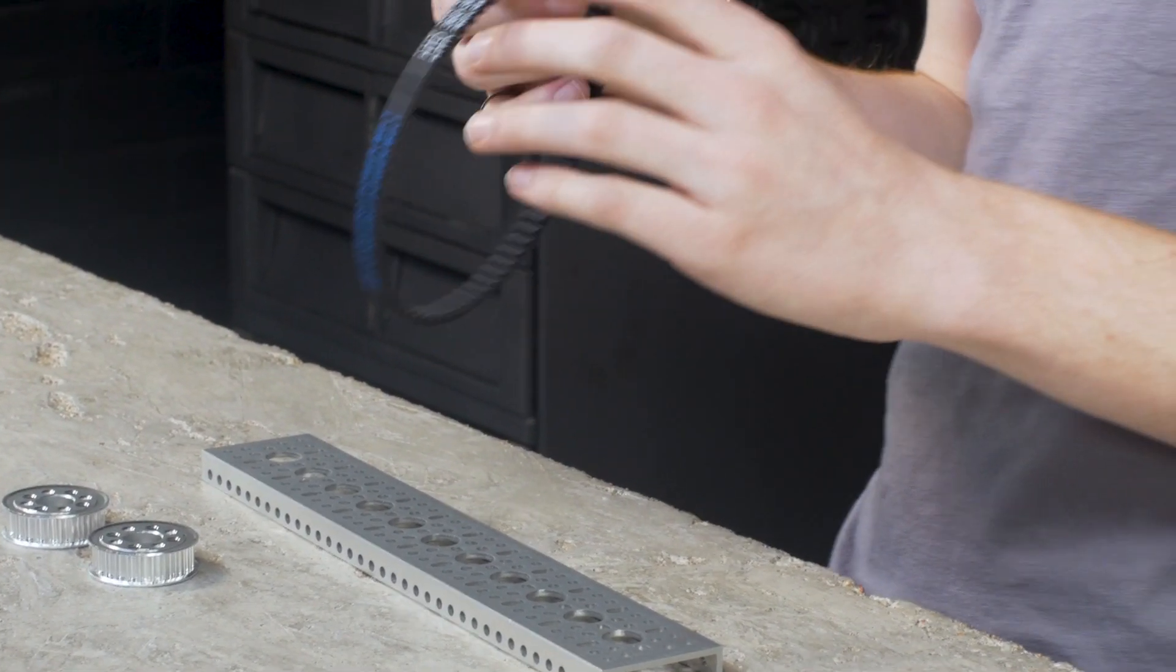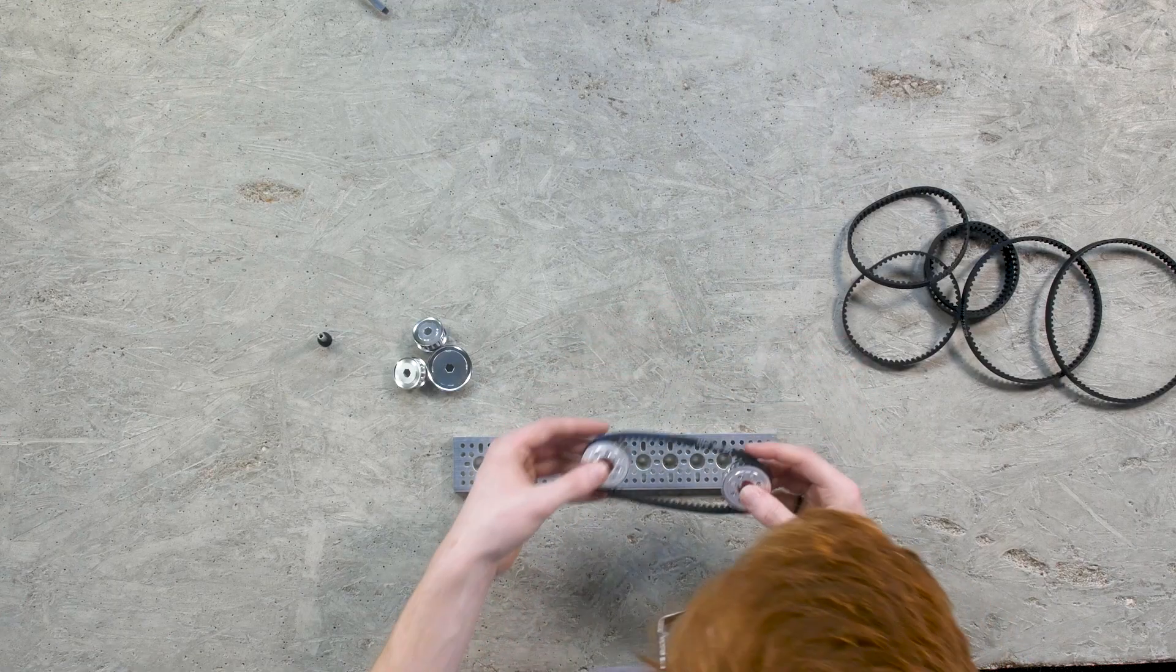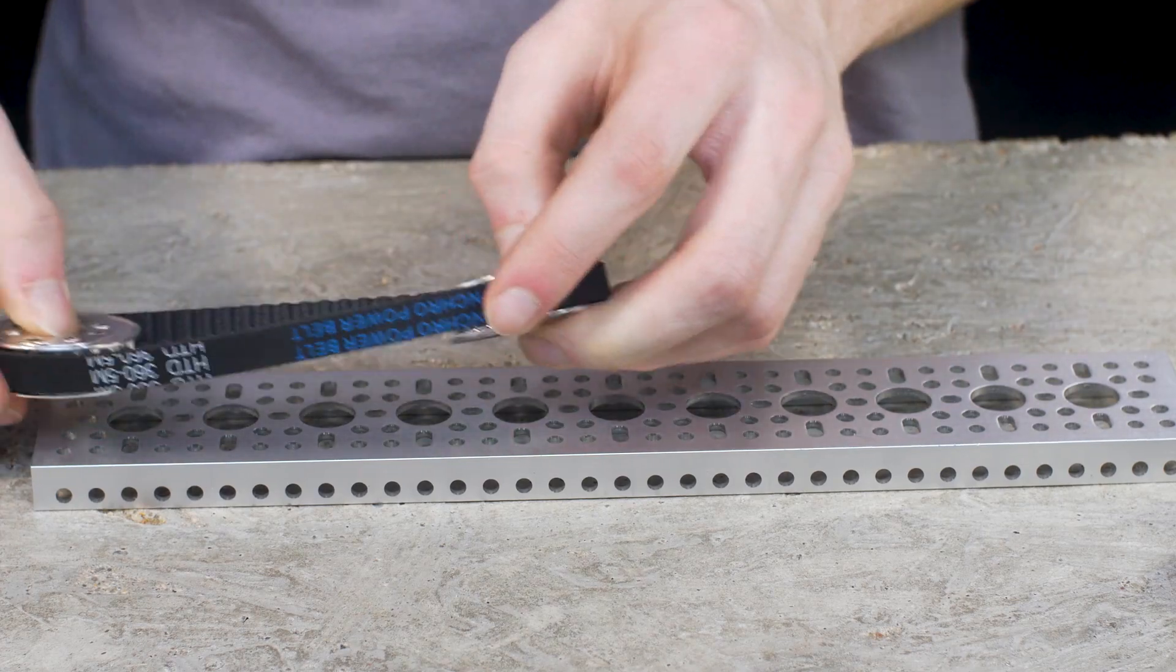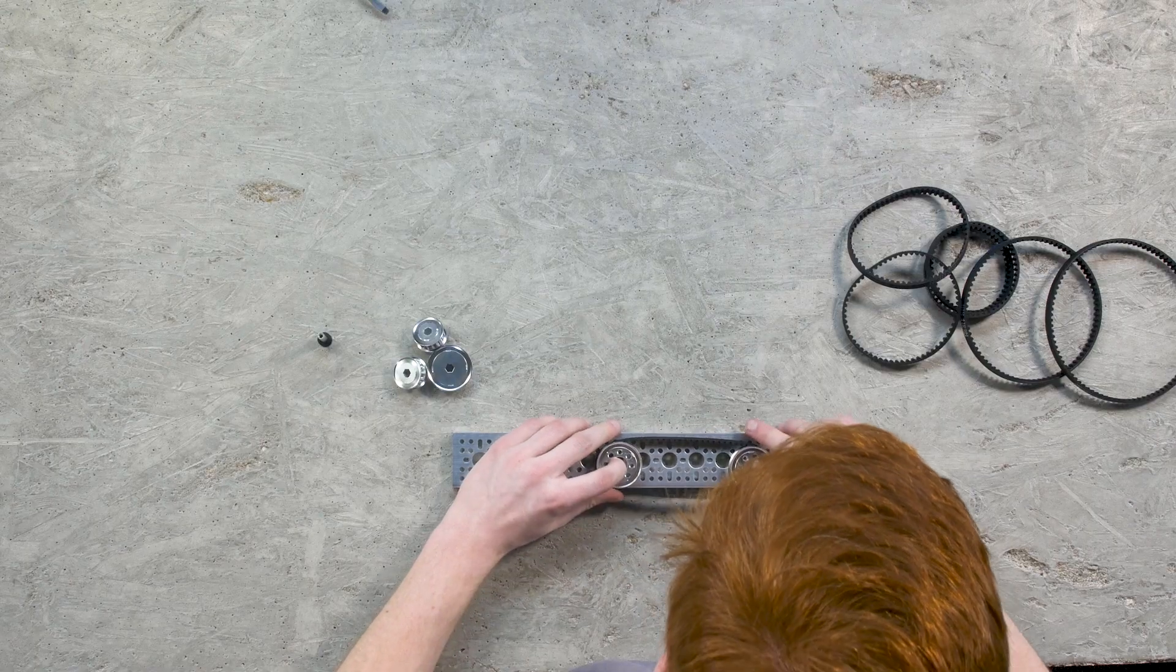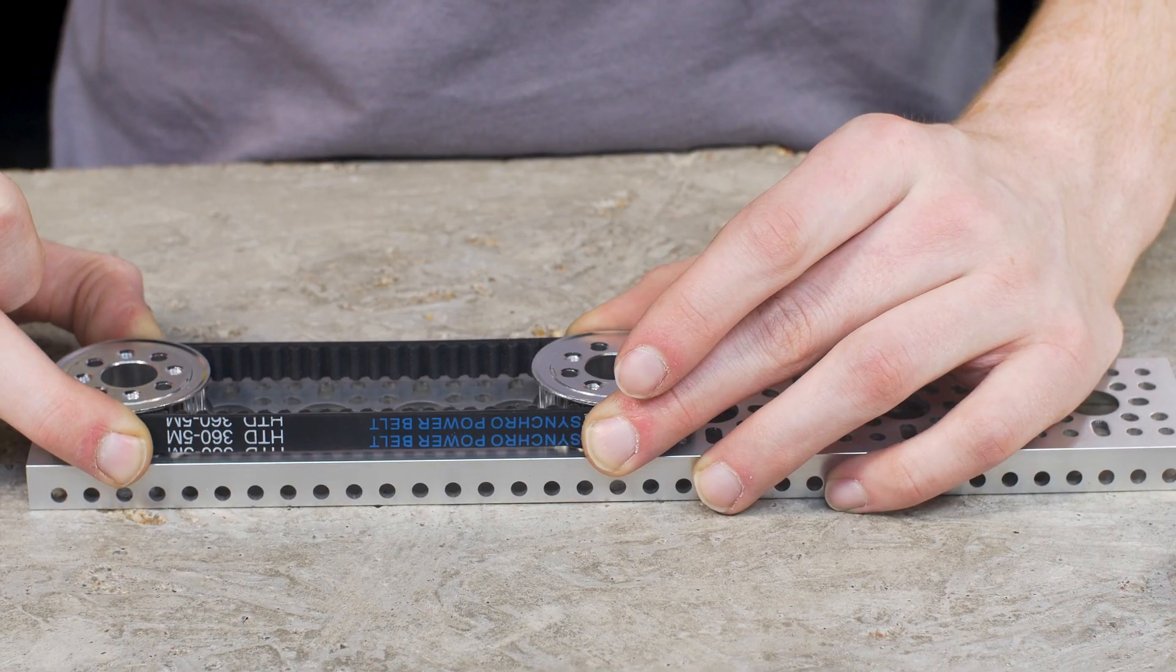Now there are some exceptions. The 360 millimeter long belt with 24 tooth pulleys will work just fine and will evenly stretch out very nicely on the 14 mil holes on GoBuilder channel.